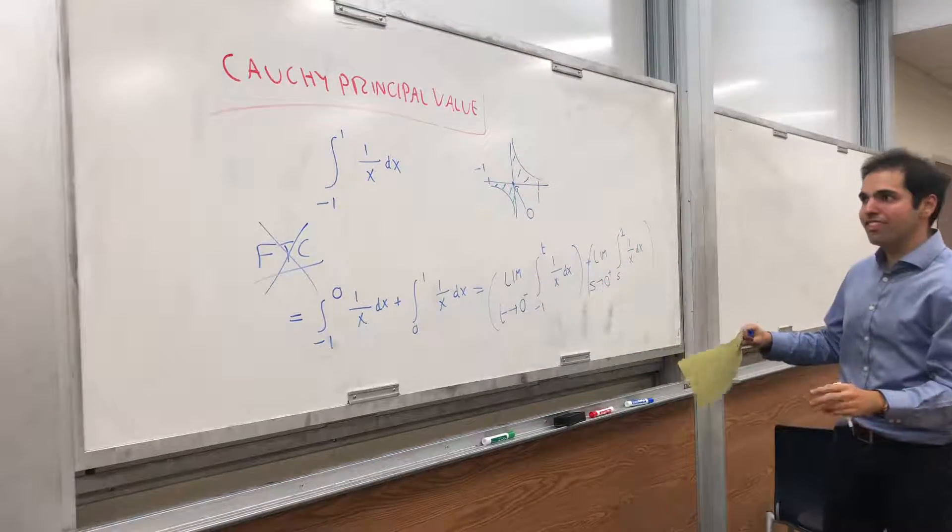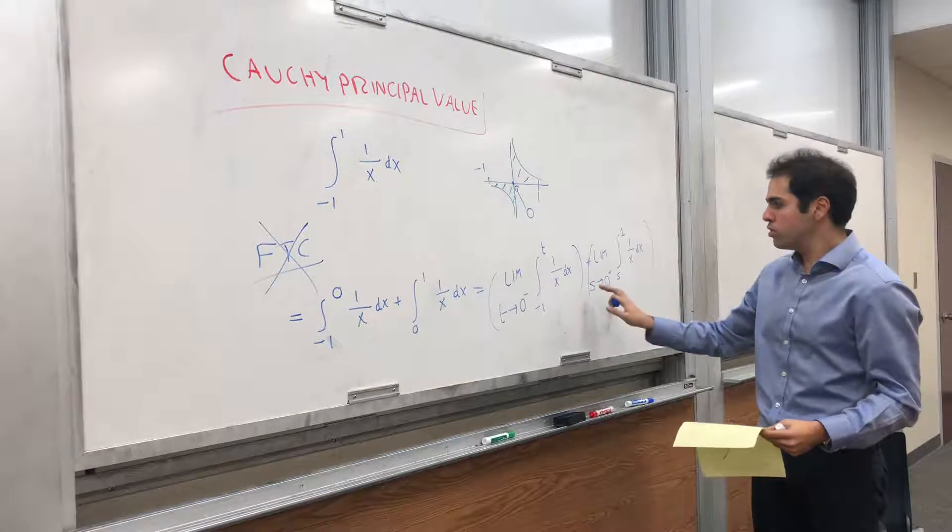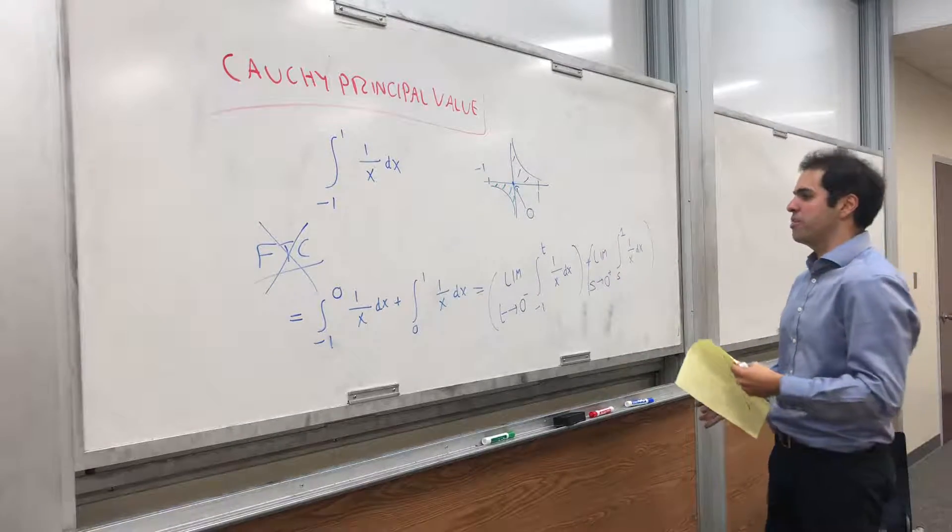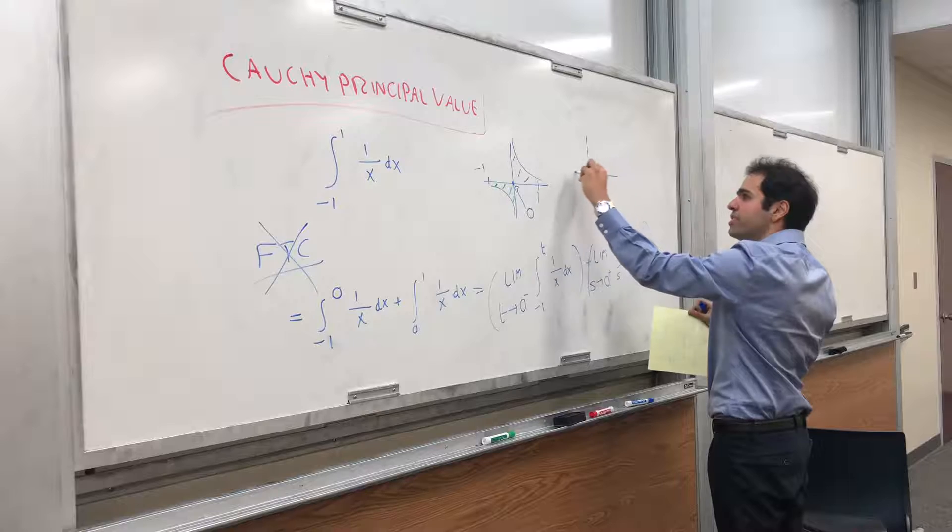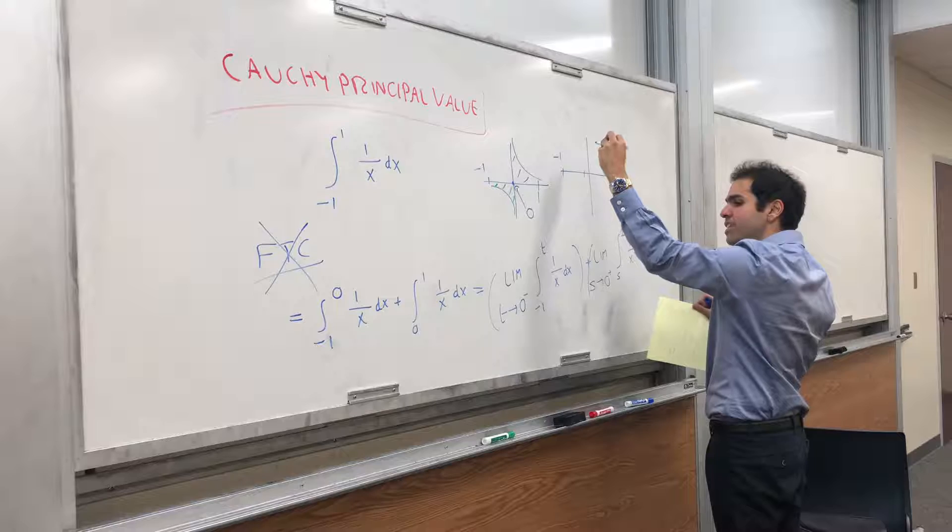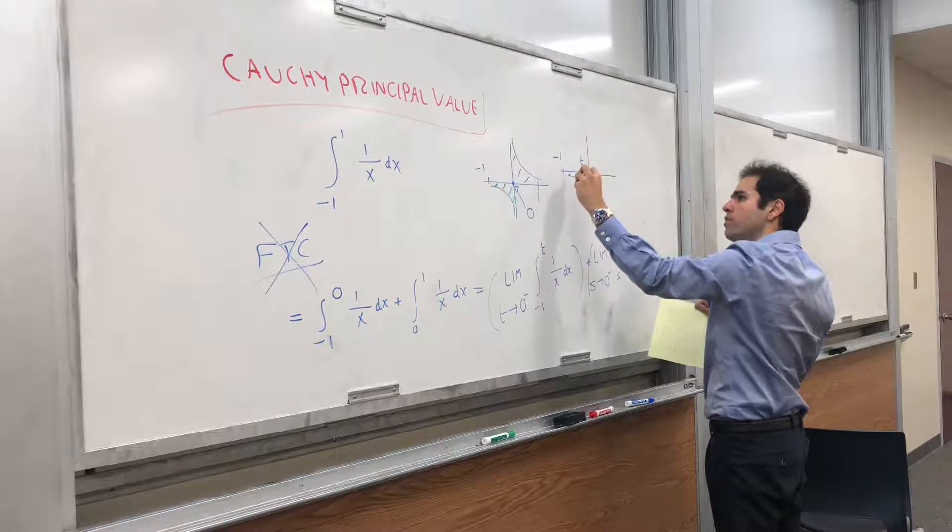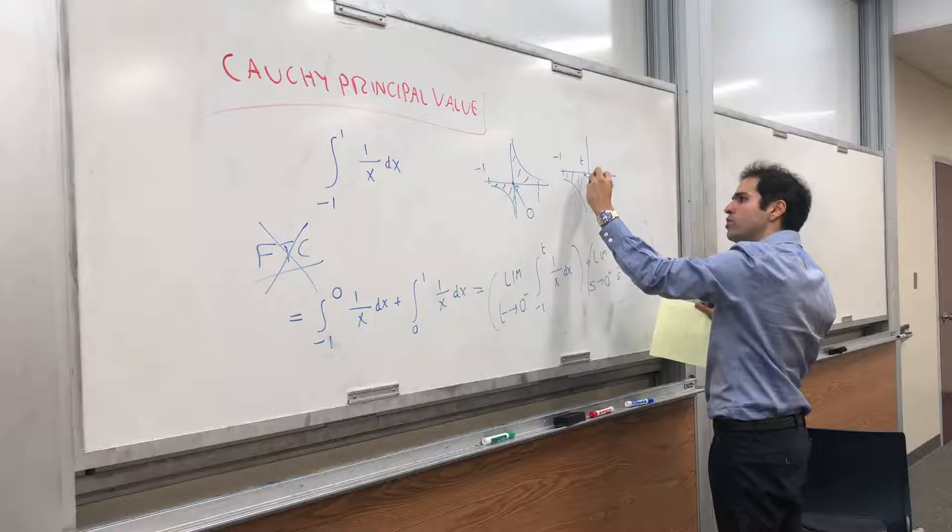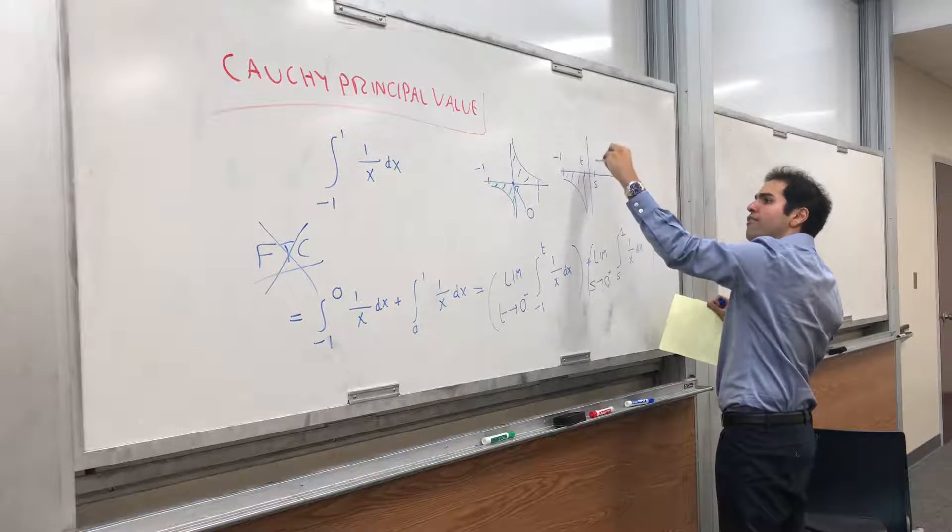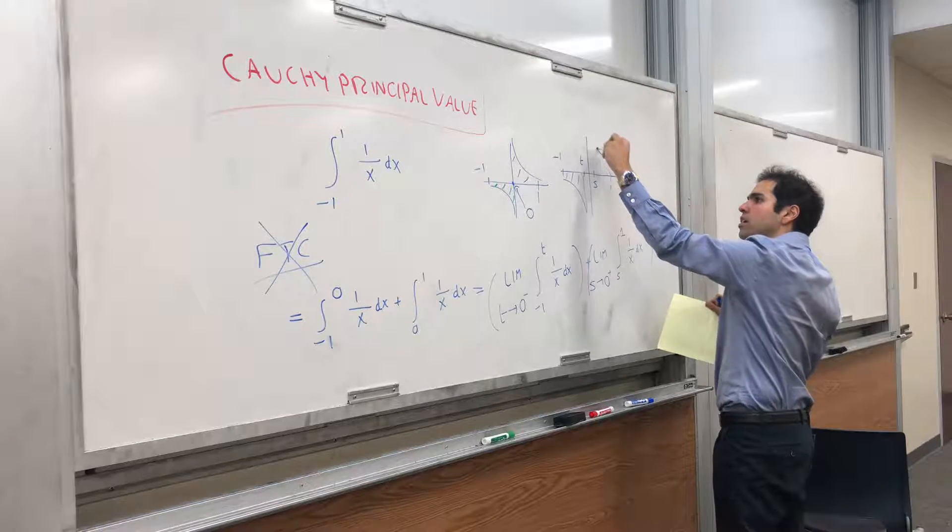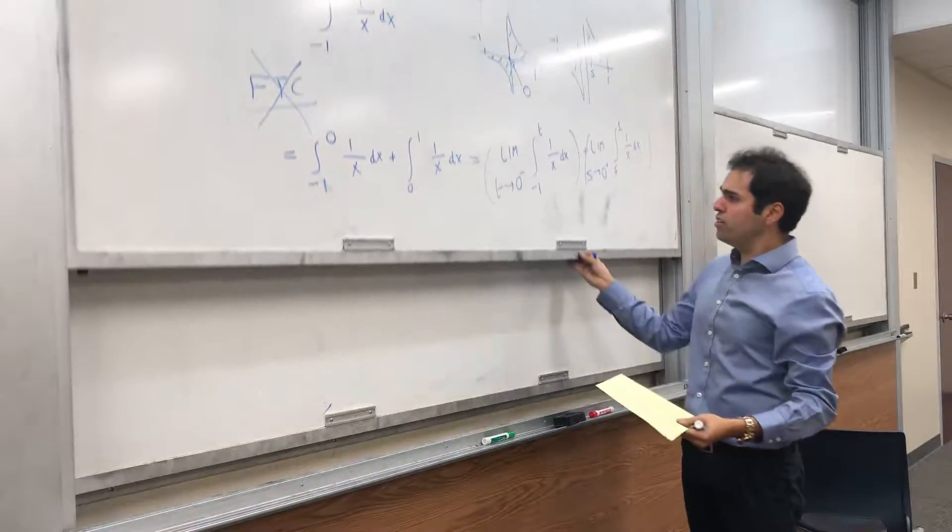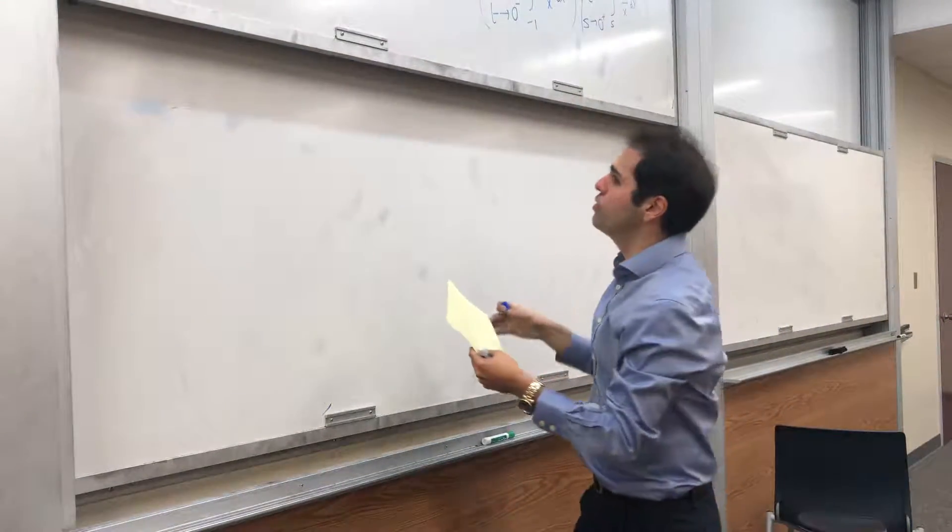Again, I want to emphasize for improper integrals, those two variables are different. You're not allowed to take the same variable. And essentially what you're doing, you're saying, well, to evaluate this integral, let's calculate the integral from minus 1 to a very small number, and the integral from a very small number to 1. And let's see if we can add those two areas. Well, if you do that, then again, you know, use the FTC.